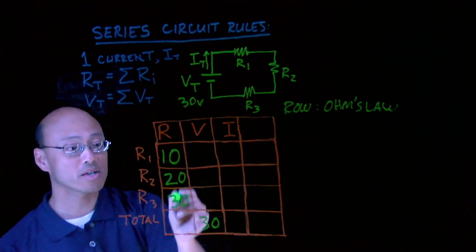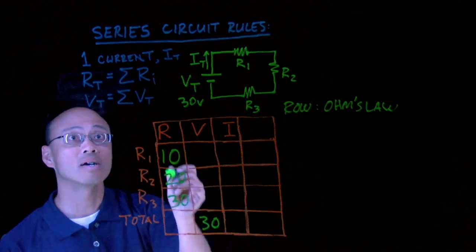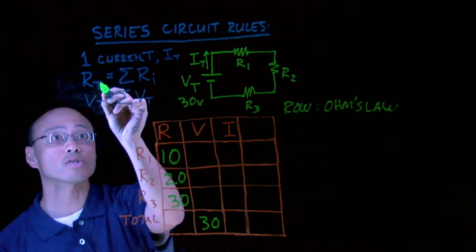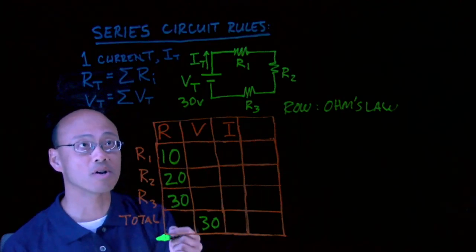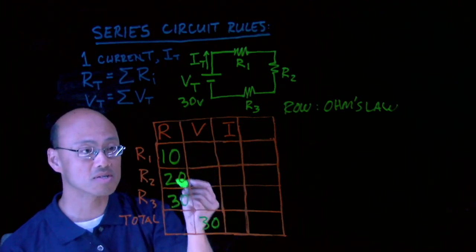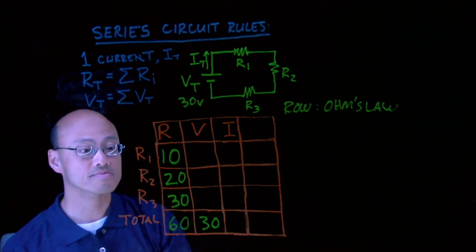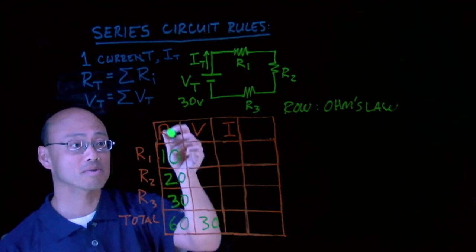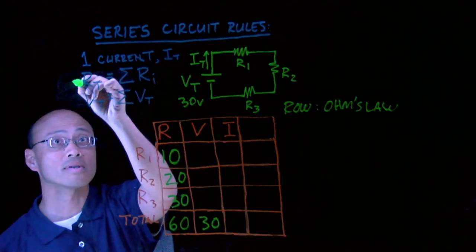For example, this one catches your eye, right? It's like, oh, I got all the boxes. I just got one missing. Well, what rule helps there? The total resistance for a series circuit is equal to the sum of the resistances. So I'm just going to add them all up. The total resistance, 10, 20, 30, is going to be 60. And that, I went vertical, so I was using a rule, this rule, about a series circuit.